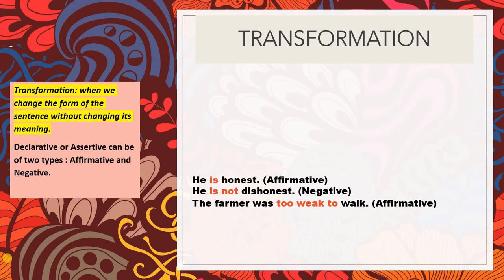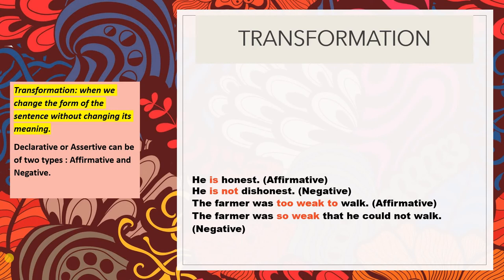Consider: 'The farmer was too weak to walk.' This uses a different kind of construction — the verb is affirmative in nature, but three words are involved: too, weak, to. When transformed, it becomes 'The farmer was so weak that he could not walk.' So 'too weak to' changes to 'so weak that,' and the meaning remains the same.